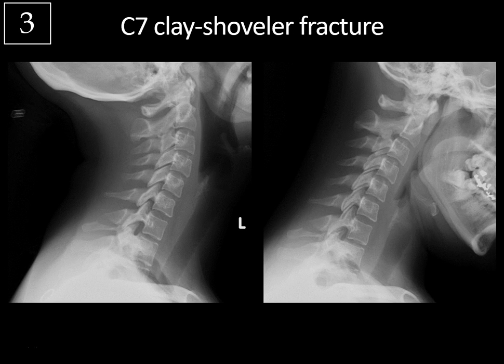A clay shoveler fracture is any fracture of the spinous process of a lower cervical vertebra. These are best seen on lateral radiographs and are often displaced. This one gets slightly more distracted on the flexion view, and C7 is the most common location. Originally described in clay shovelers whose shovels got stuck in sticky clay — when they attempted to shovel against it, they got a sudden flexion force on the neck causing this fracture. We now see this more commonly with trauma like MVAs.